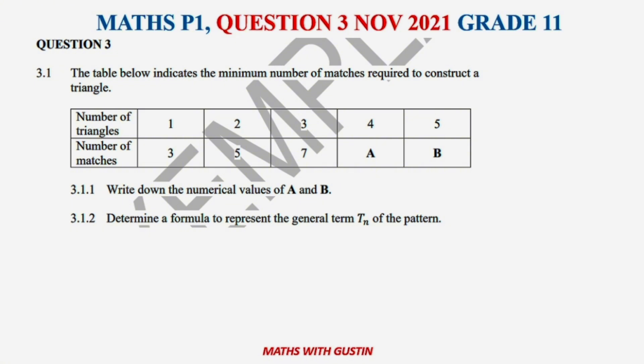The table below indicates the minimum number of matches required to construct a triangle. We've got 1, 2, 3, 4, which is the number of triangles, and then we also got number of matches is going to be 3, 5, 7, and then A and B.